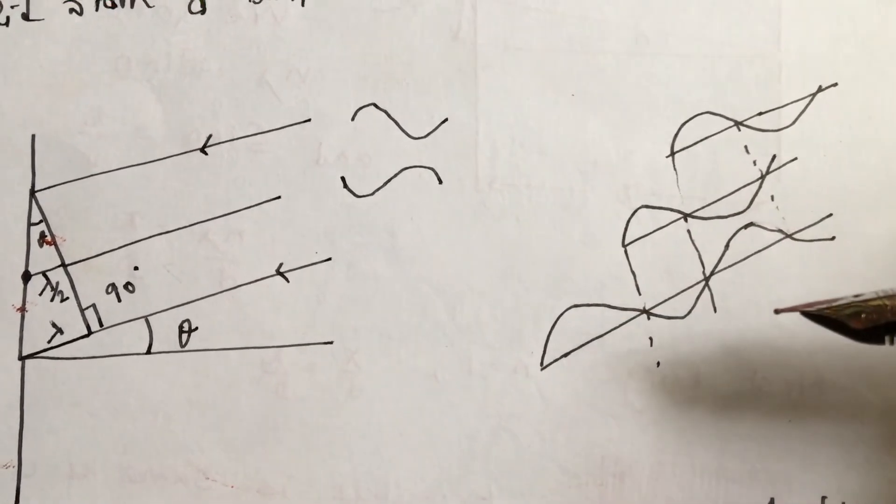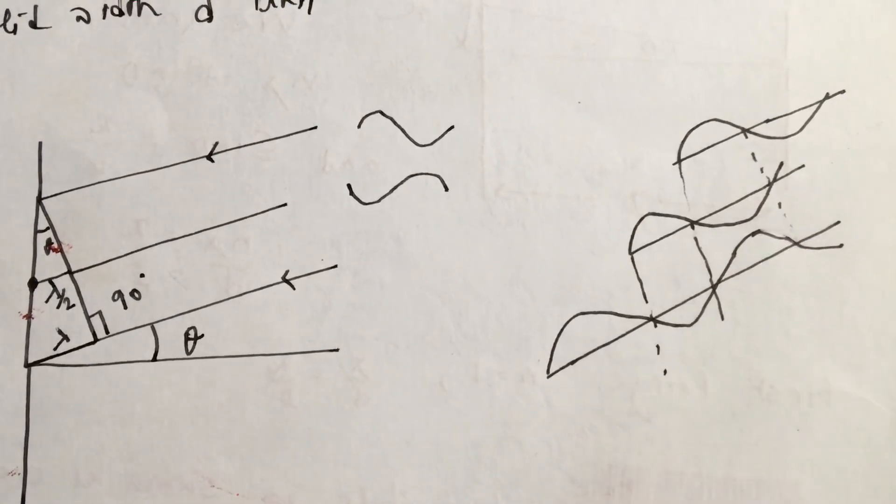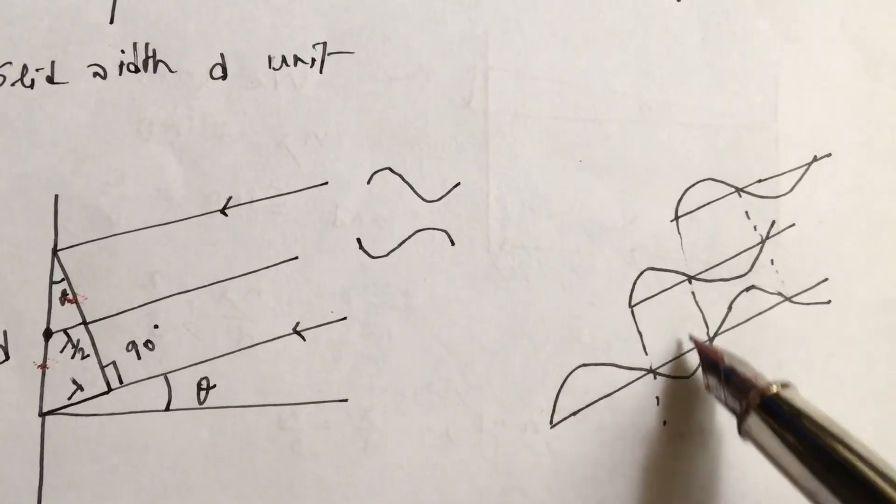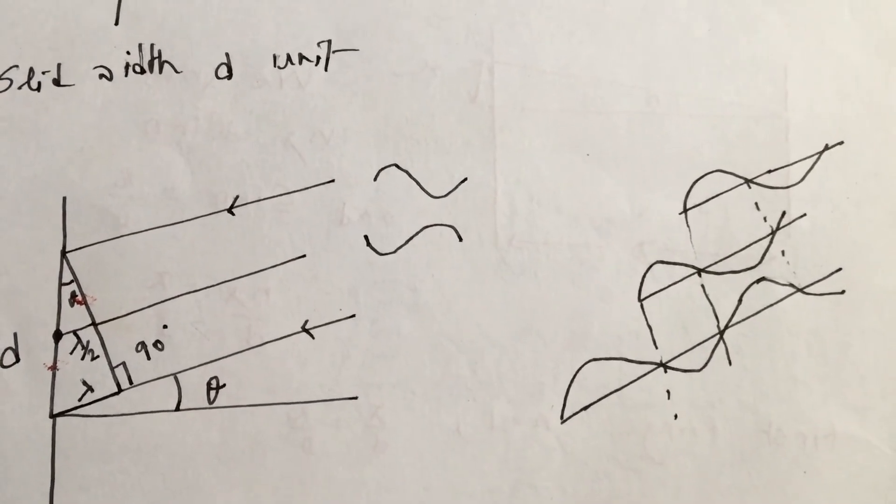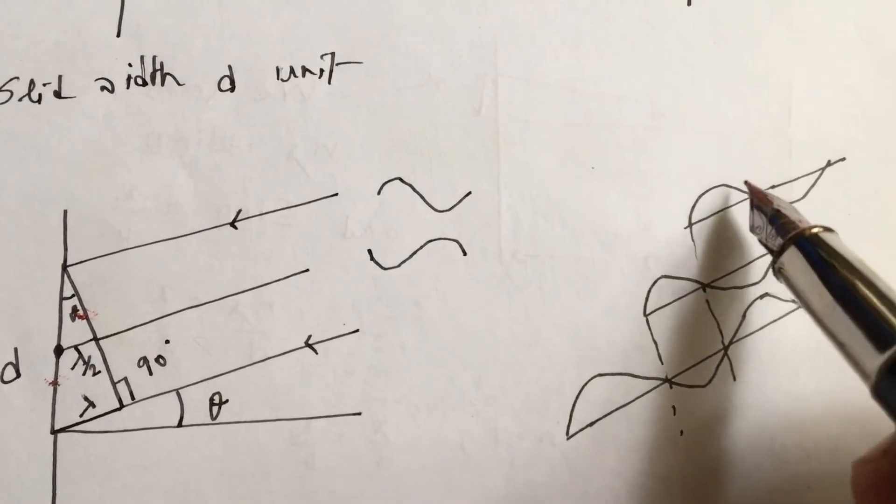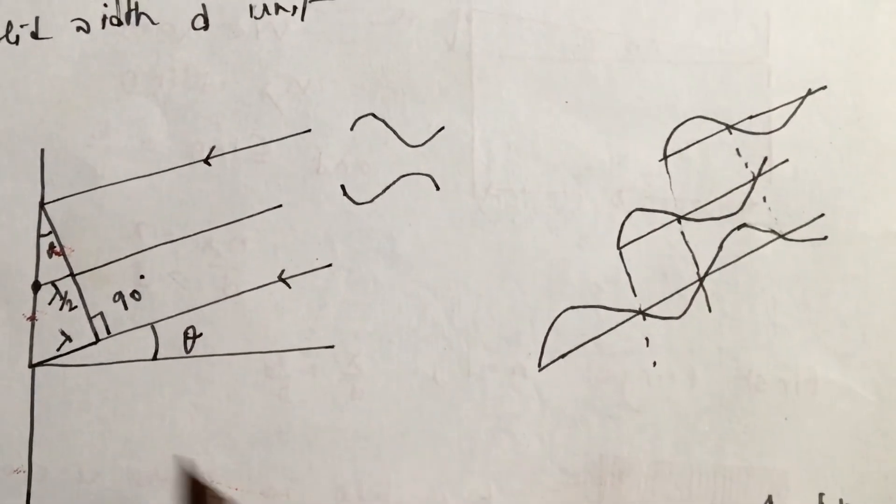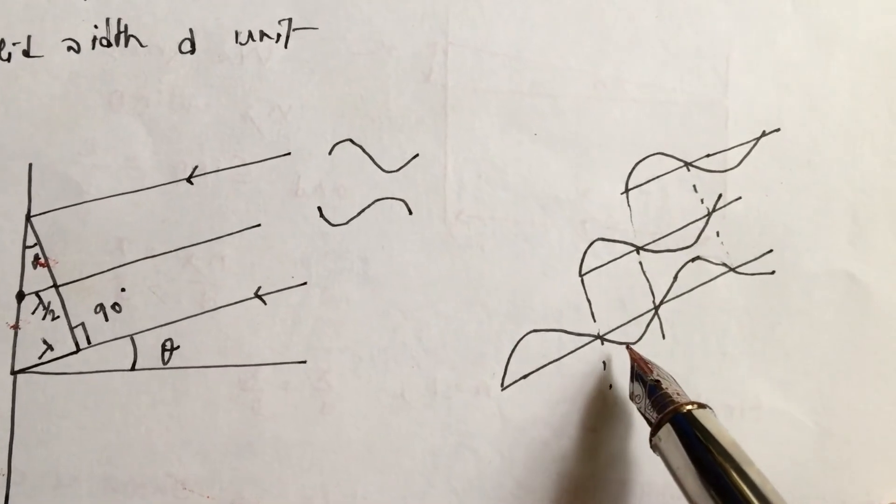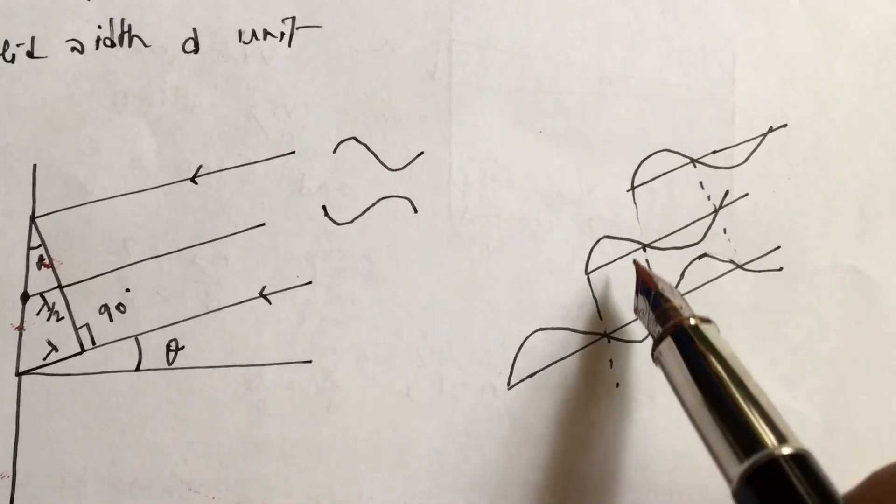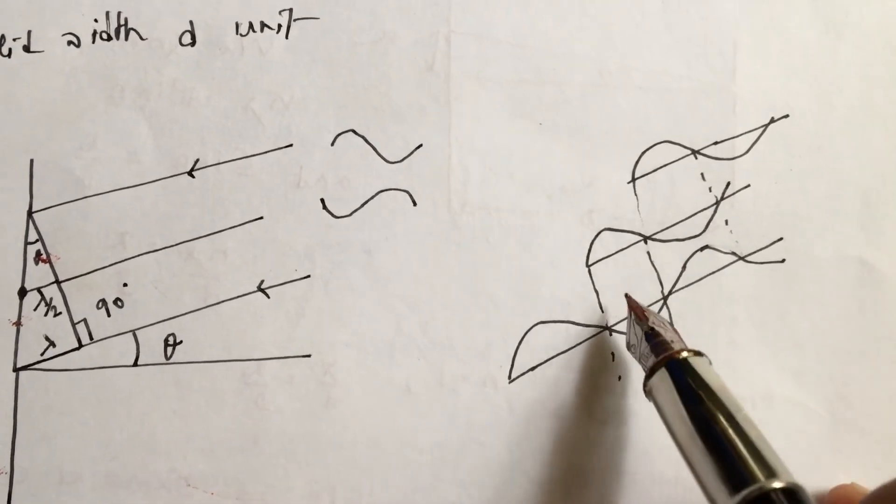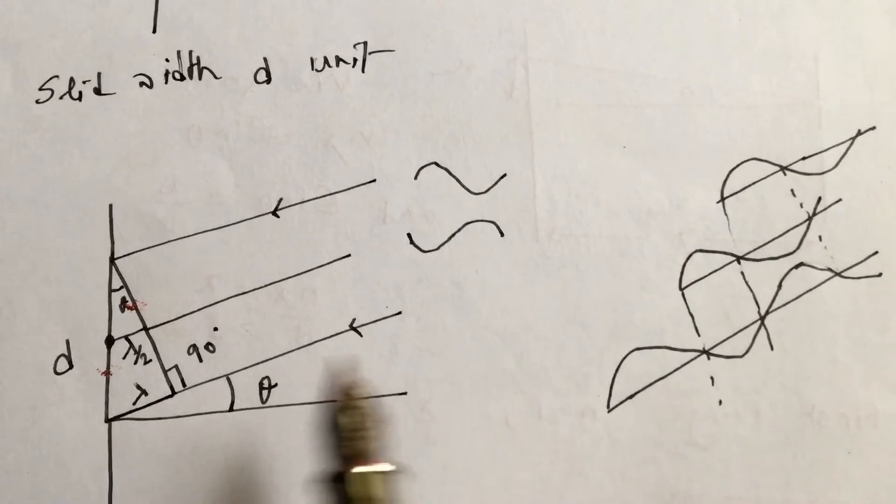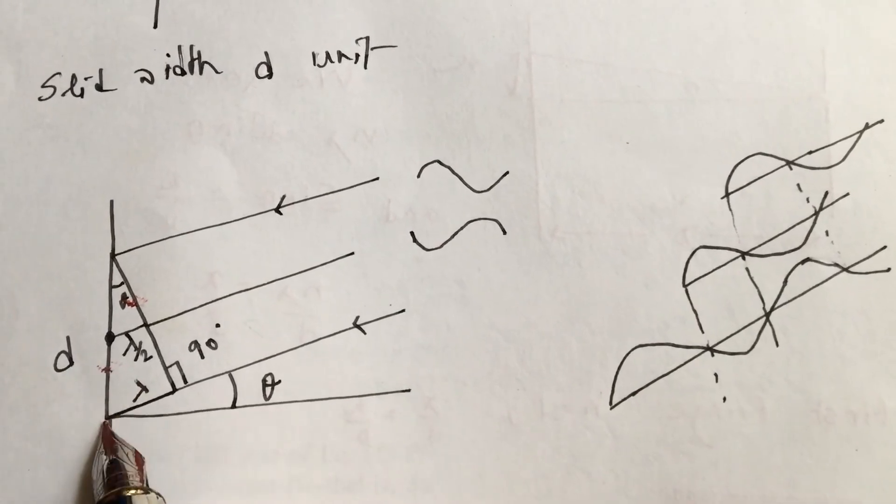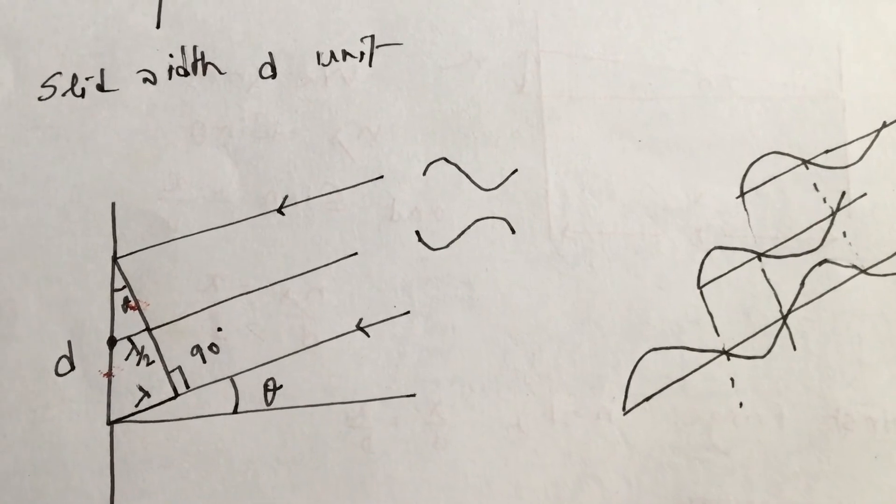The waves have cancelled each other - this maxima and this minima will cancel out. The waves emanating from this point and this point, they are again 180 degrees out of phase with each other, so they will cancel out. Every point on this half and every wave emanating from this half will cancel out each other, and we get the darkness of the fringe.